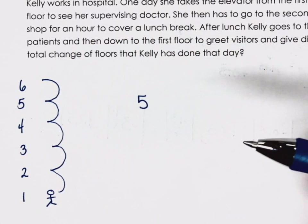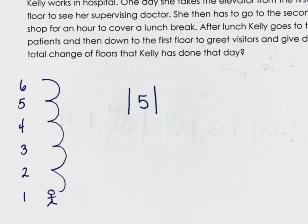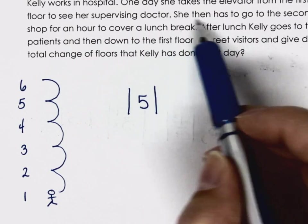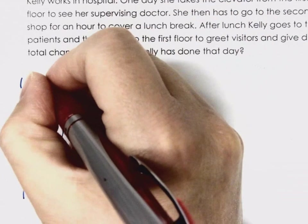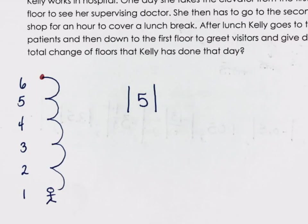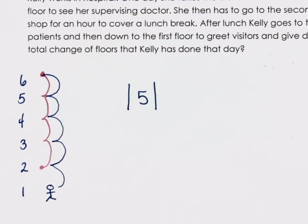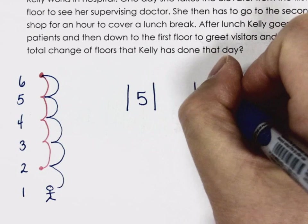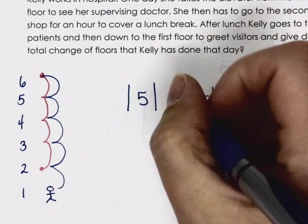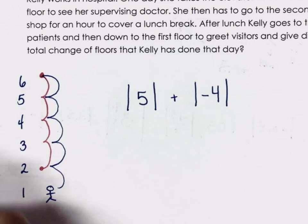She would still have traveled five floors whether she went from first to sixth or sixth to first. Then she has to go to the second floor to work in the gift shop — from the sixth floor down to the second floor is four floors. Down in math is negative, but we don't care about direction, so we ignore the negative by using absolute brackets.